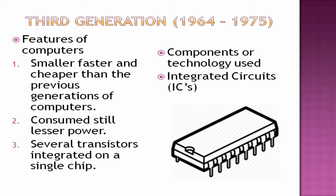Third generation computers lasted from 1964 to 1975. Their features were: smaller, faster, and cheaper than the previous generations, consuming still less power. Several transistors were integrated on a single chip. The components used were integrated circuits, that is, ICs.